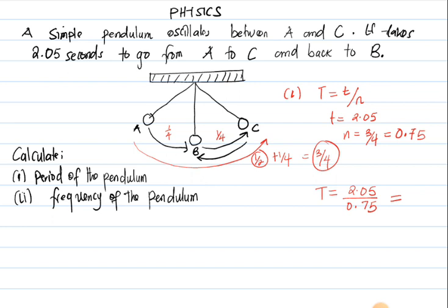And part two says frequency. Now to find frequency, we know that frequency is just the number of complete oscillations over time taken. Frequency is 0.75 divided by 2.05, so our frequency is 0.37 hertz.